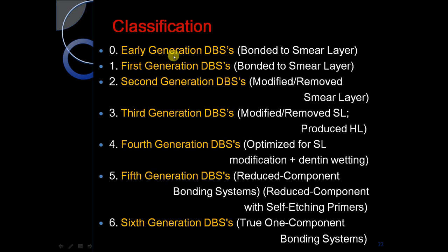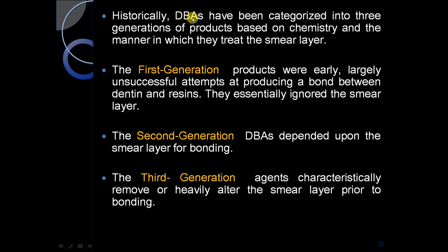Now the classification: early generation dentine bonding agents bonded to the smear layer. First generation bonded to the smear layer. Second generation modified or removed the smear layer. Third generation removed the smear layer and produced an etch and hybrid layer. Fourth generation was optimized for smear layer plus dentine wetting. Fifth generation reduced components of the bonding system with a self-etching primer. Sixth generation is a true one-component bonding system.